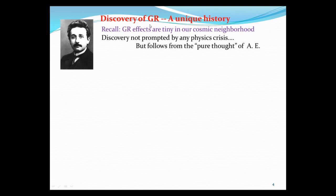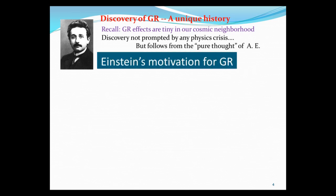Now, the relative theory is general relativity of Einstein, which has really a unique history. Because remember, most physics discovery were made when there's a crisis and we need to then force us to discover new effects. But GR effects are tiny in our cosmic neighborhood. So we cannot, by looking at any phenomena, say that's not compatible with Newton's theory. We need to find a new theory. And the discovery of GR is entirely prompted by the pure thought of Albert Einstein. So therefore, we need to know what's his motivation, since there was no crisis to solve, why he wanted to find the GR.